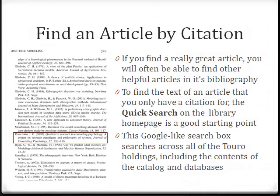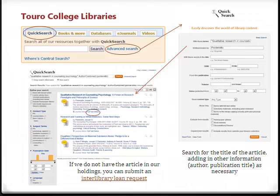Speaking of references, if you find a really great article, you will often be able to find other helpful articles in its bibliography. To find the text of an article that you only have a citation for, the quick search on the library homepage is a good starting point. This searches across all of the library holdings, including the catalog and databases. Search for the title of the article, adding in other information as necessary. If we do not have the article in our holdings, you can submit an interlibrary loan request.